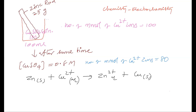In this reaction we mainly consider the n-factor. Zinc is converting from 0 to +2 oxidation state, so n-factor of zinc is 2. Copper ion is converting to copper atom, so n-factor is also 2. Therefore n-factor for zinc and copper are the same.